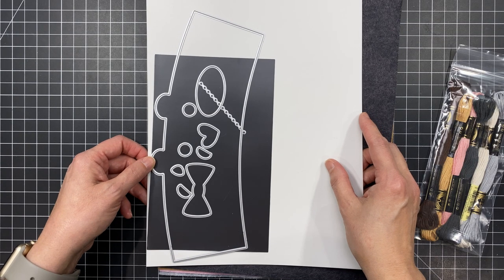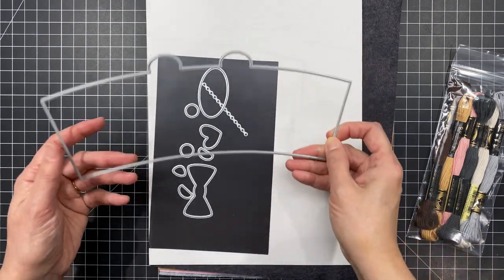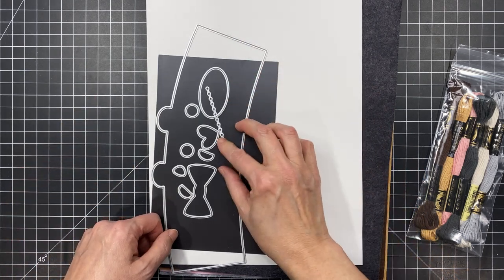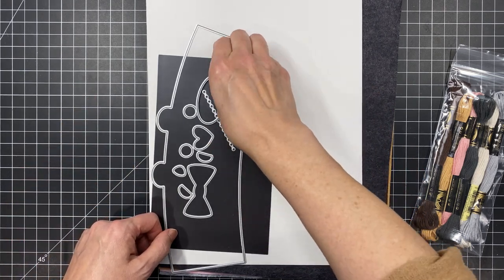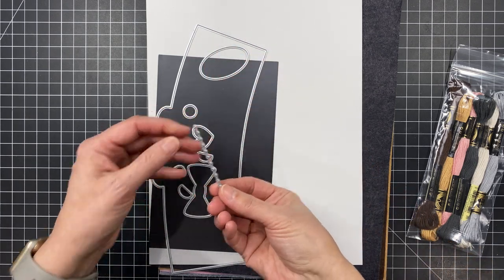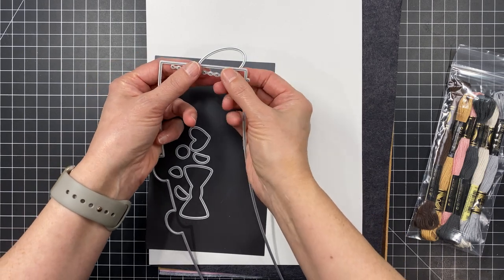Now this is a longer format die, a one-piece die that's going to wrap around your cup completely in one piece. So you're going to need an extended platform or the Platinum XL in order to cut it in one pass. And it's got all the other little embellishments, including some stitching holes.